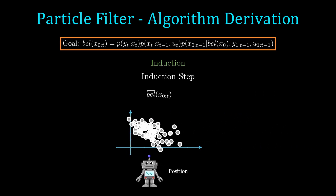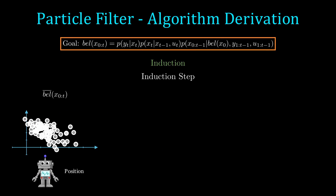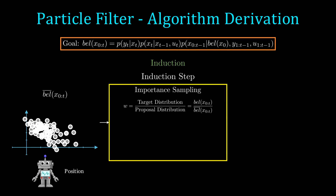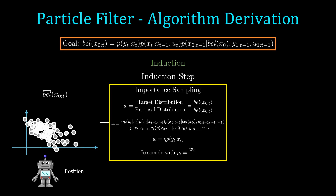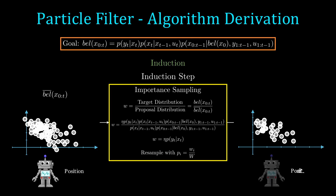We now need to apply the correction step. By importance sampling, we define our target distribution to be our goal distribution, bel of x_t, and the proposal distribution is bel-bar of x_t. Consequently, we see that the importance weight is the scaling p of y_t given x_t. So by calculating the weights and then resampling, we get our new belief. And that's all there is to the particle filter.